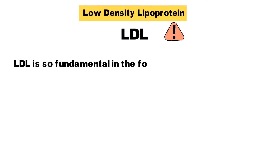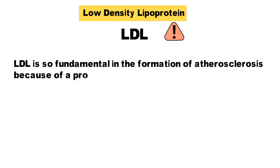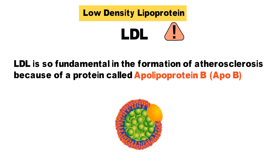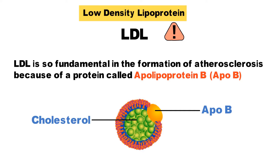LDL is so fundamental in the formation of atherosclerosis because of a protein called apolipoprotein B. Apolipoprotein B, or ApoB, is a structural protein that surrounds LDL cholesterol and other cholesterol-rich lipoproteins.